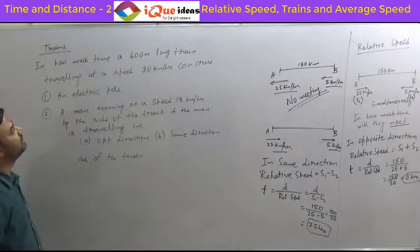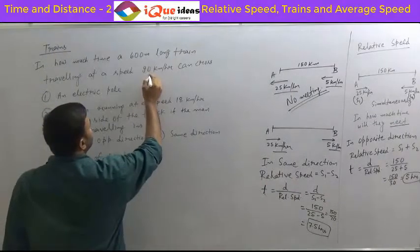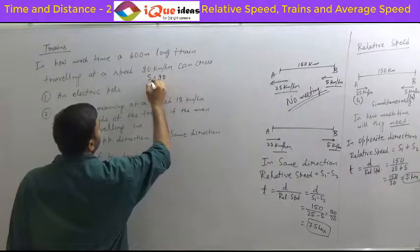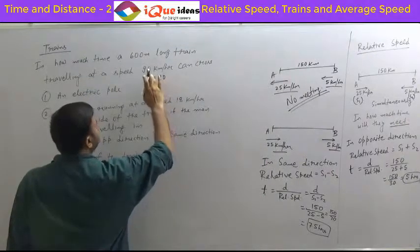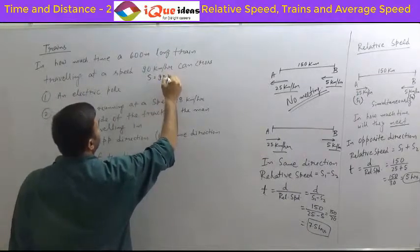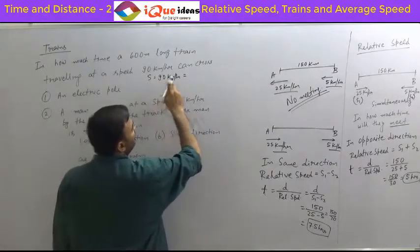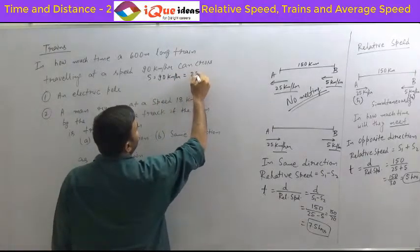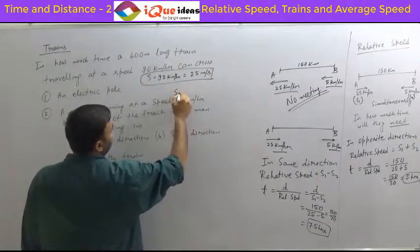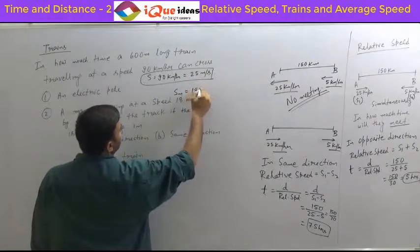The length of the train is 600 meters. First, let's convert the speeds. The speed of the train, S_T, is 90 km per hour, which equals 25 meters per second. The speed of the man, S_M, is 18 km per hour, which equals 5 meters per second.